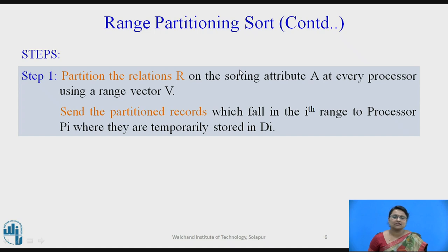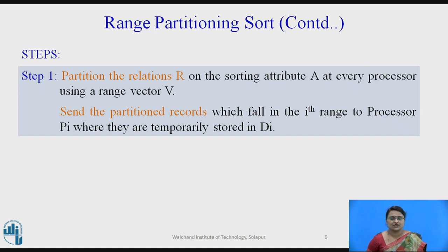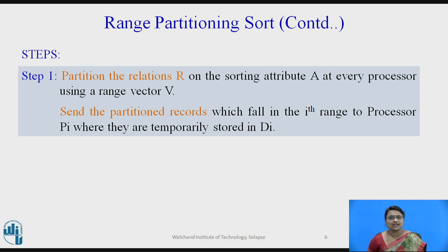Now let us go through the steps of range partitioning sort. The first step is partitioning the relation R. The data is already partitioned, but not in the way we want it. Since we want to sort on attribute A, for example roll number in a student record, we partition based on that attribute. We identify a range vector V with components V0, V1, V2, and send partition records that fall in the i-th range to processor Pi, where they are temporarily stored in Di.